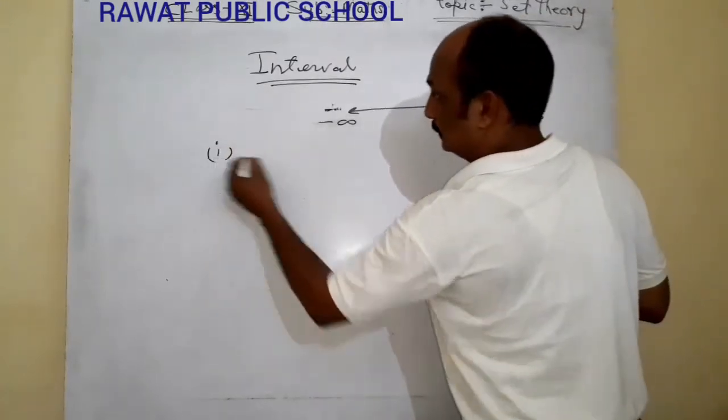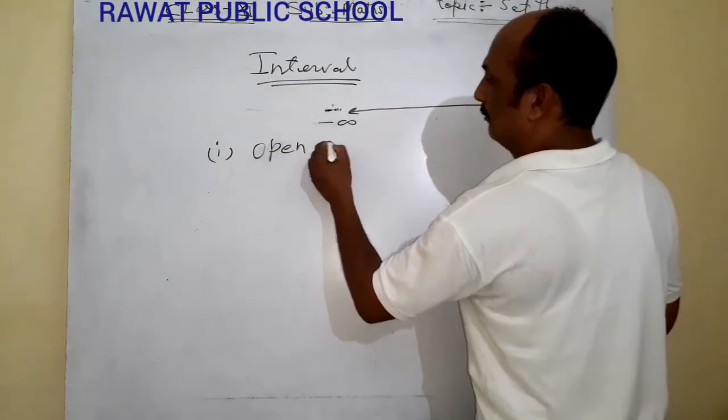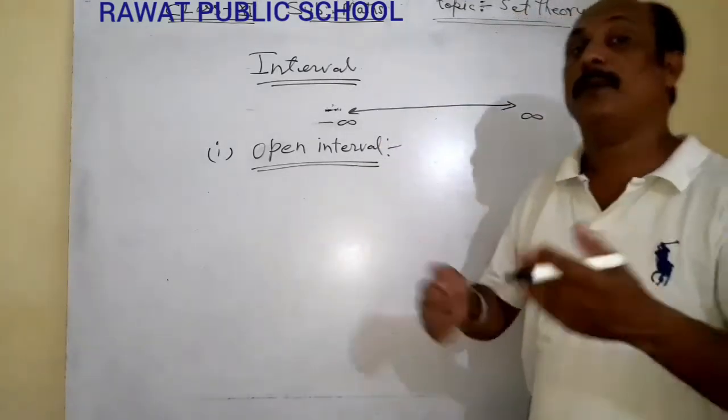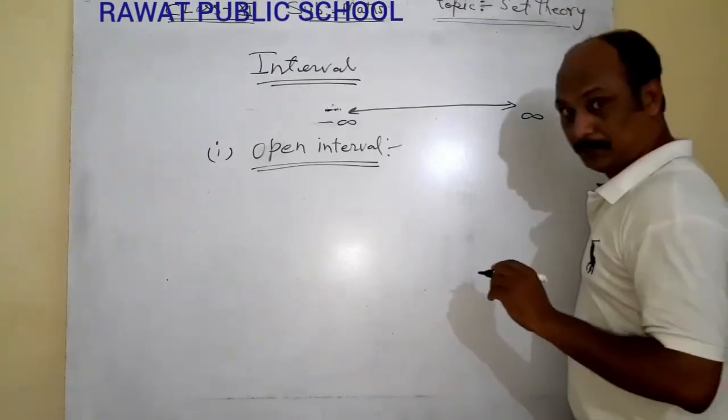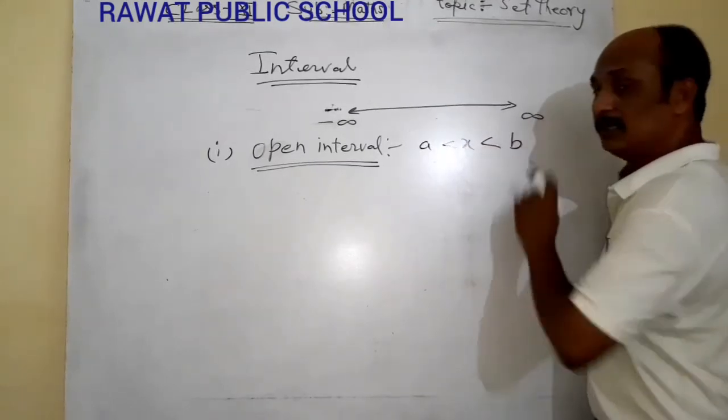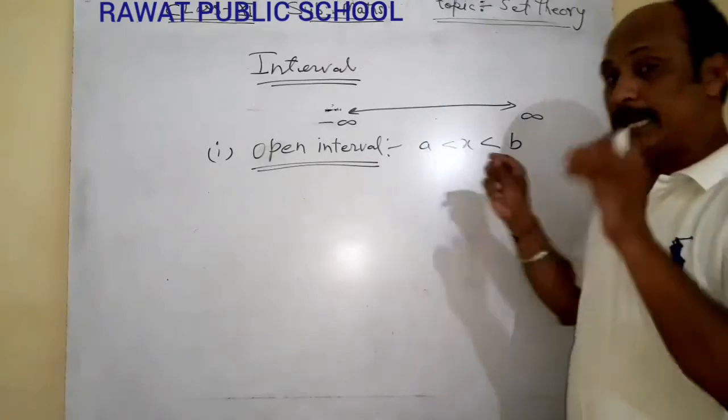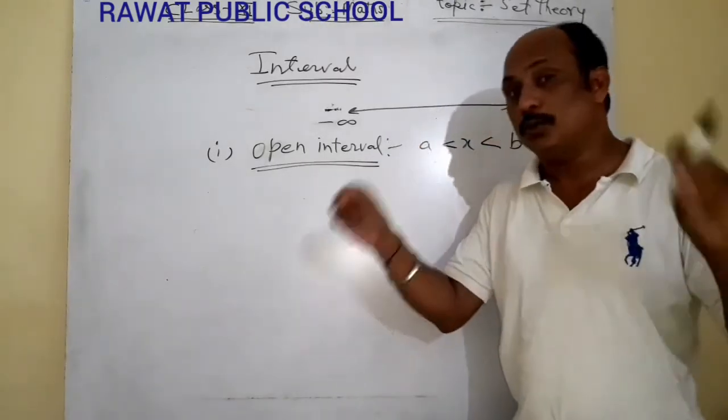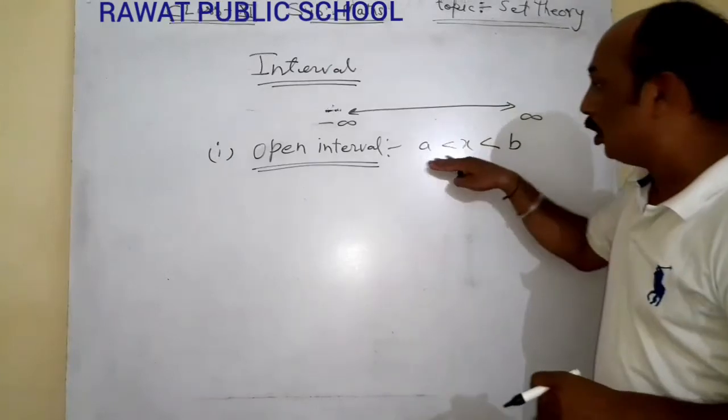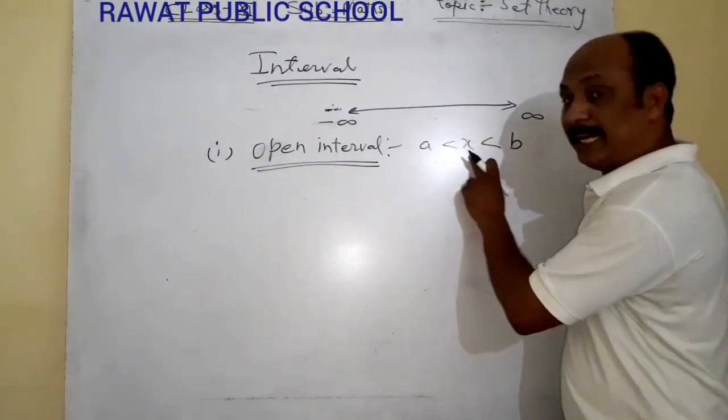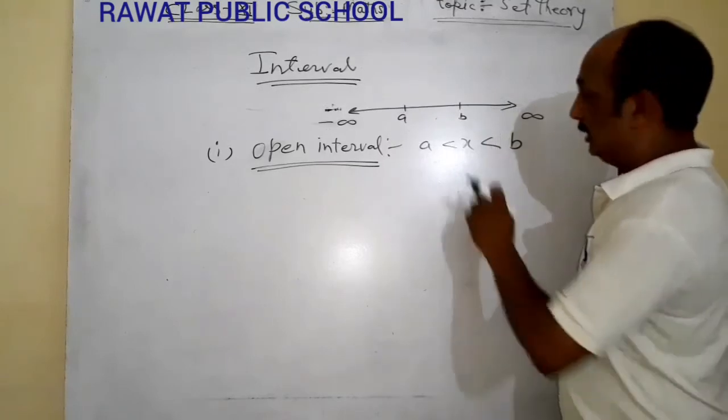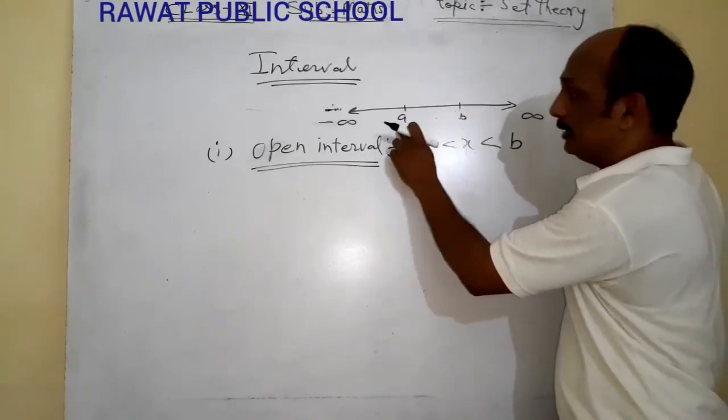First is open interval. Open interval means any number X in between A and B. A or B are any two numbers on the number line, and in between we select a number, it means that is open interval. Suppose that it is A and it is B, then we select a number in between A and B.